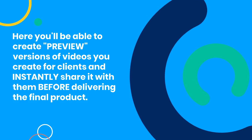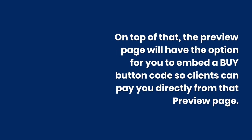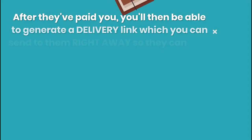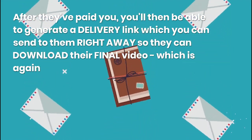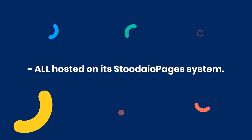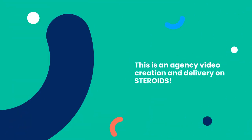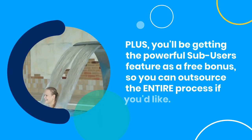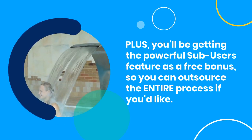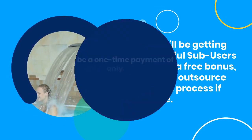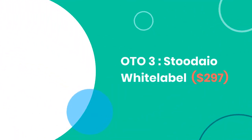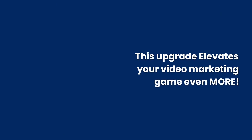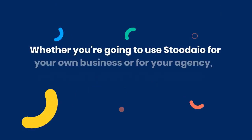OTO 2: Studio Booster, $97. This is going to take your agency rights bonus to the next level. Here you'll be able to create and preview versions of videos you create for clients, and instantly share them before delivering the final product. The preview page will have the option for you to embed a buy button code so clients can pay you directly from that preview page. After they've paid you, you'll then be able to generate a delivery link which you can send to them right away so they can download their final video — all hosted on the Studio Pages system.